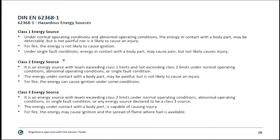There are different energy classes. Class 1 means that under normal and abnormal operating conditions, the energy in contact with a body part may be detectable but is not painful and is not likely to cause injury. A 3V supply for a device without special functionality would typically be Class 1.